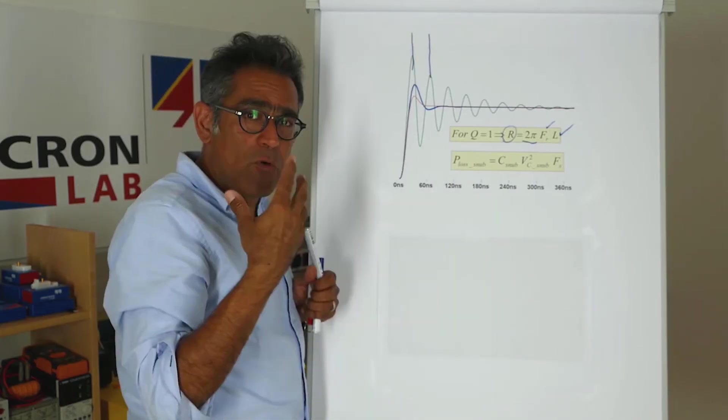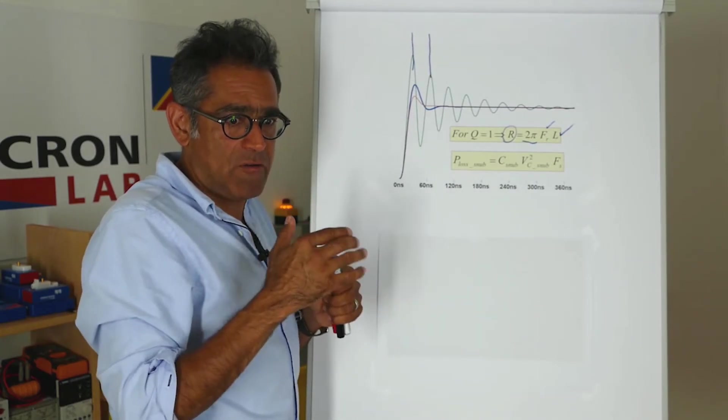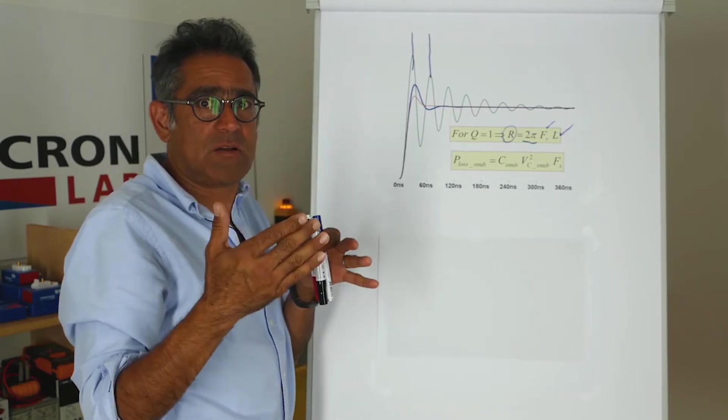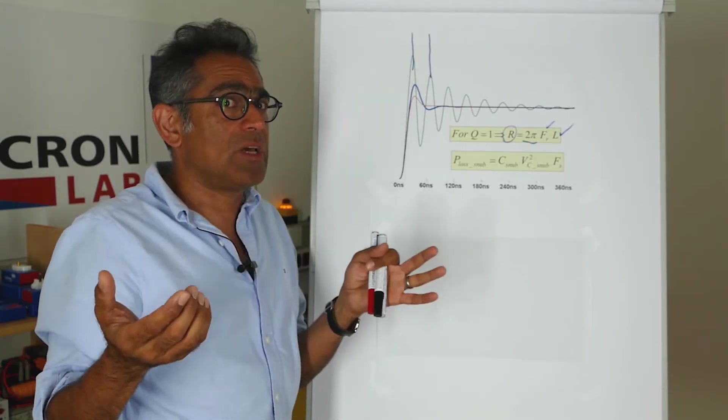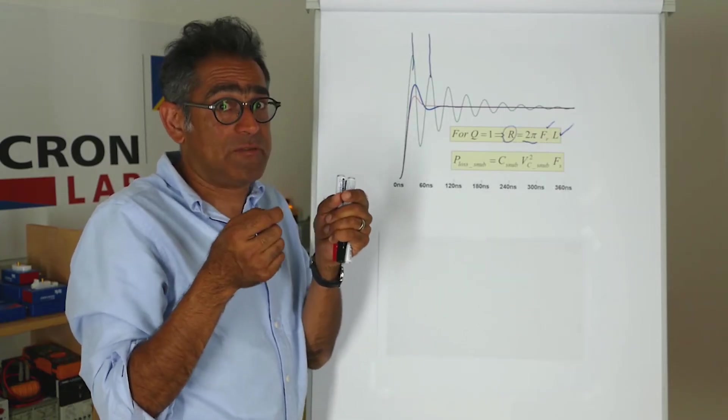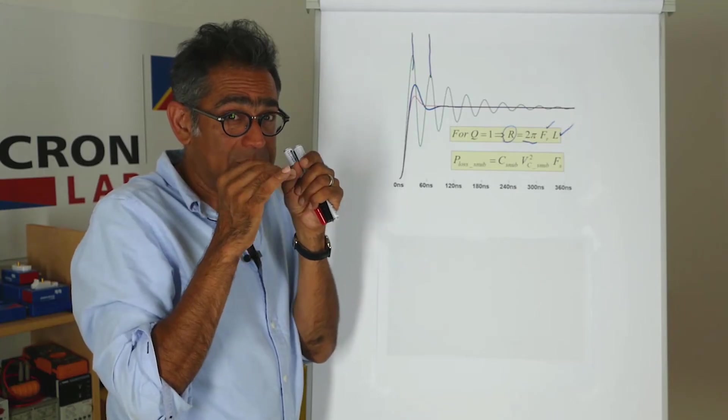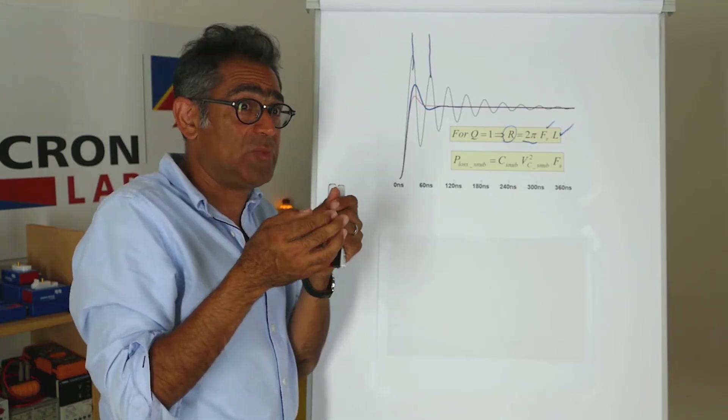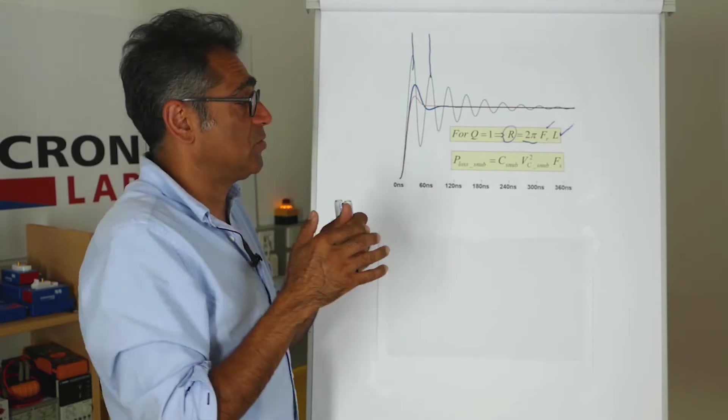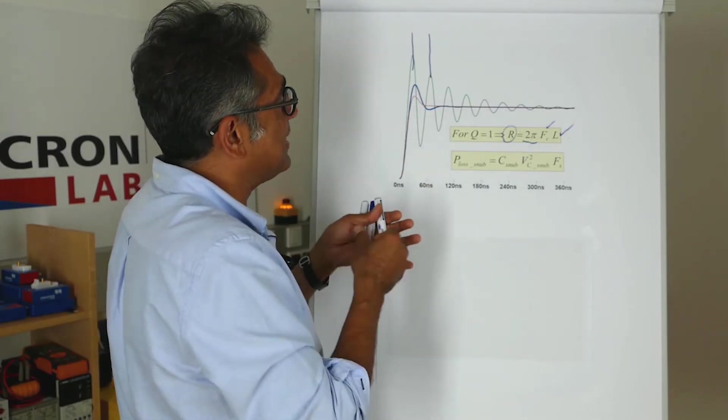...for let's say a 1210 package, I try to limit the amount of power loss to between 50 to 100 milliwatts. Even though you can buy one watt packages, the problem is that if you dissipate that sort of power, what will happen is you get a hot spot on your PCB and it starts to blacken and after a while it will fail. So to be really conservative, let's say 50 to 100 milliwatts.